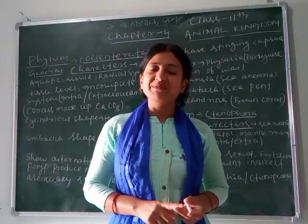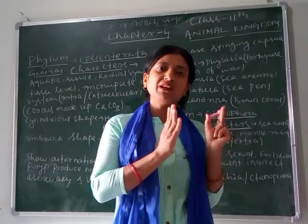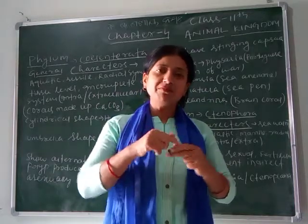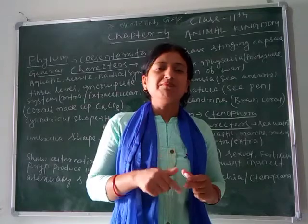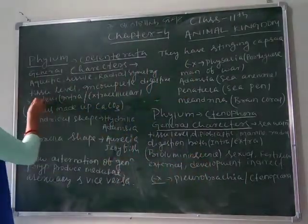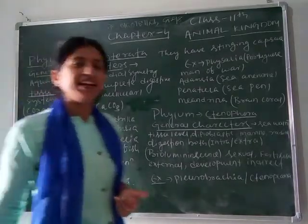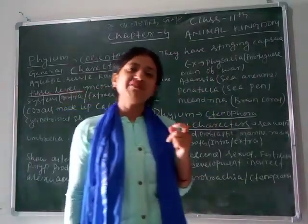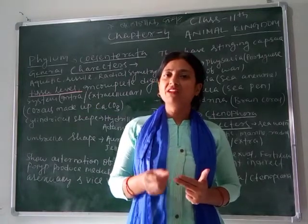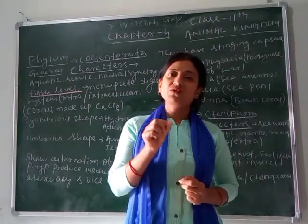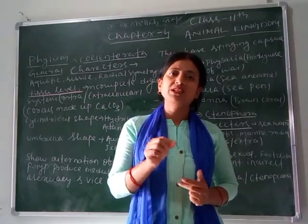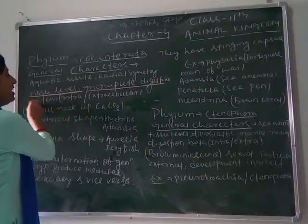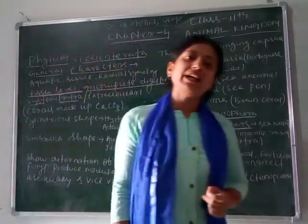Its body is bilaterally symmetrical, meaning it can be divided into two equal halves — one right and one left. It is diploblastic, meaning it has two germinal layers: ectoderm (outer layer) and endoderm (inner layer). It has tissue level of organization, meaning its body consists of tissues, and the digestive system is incomplete.